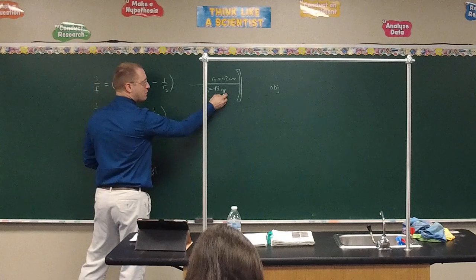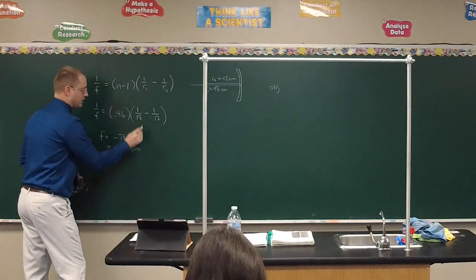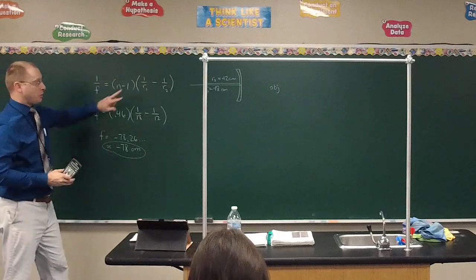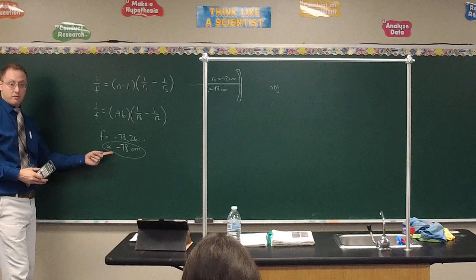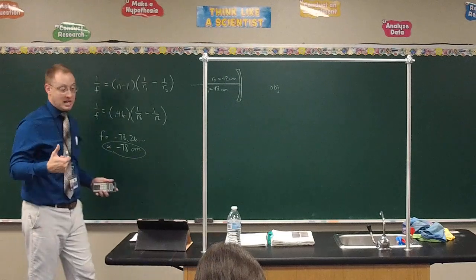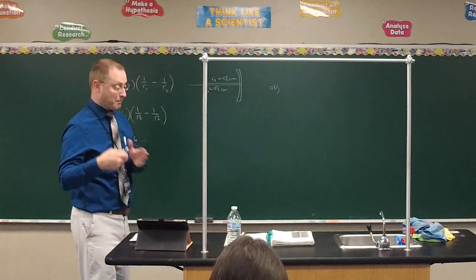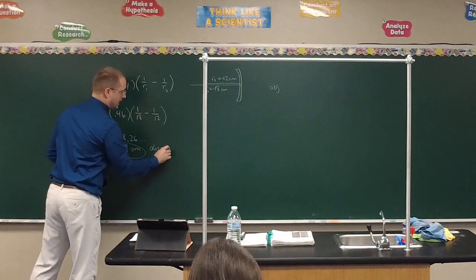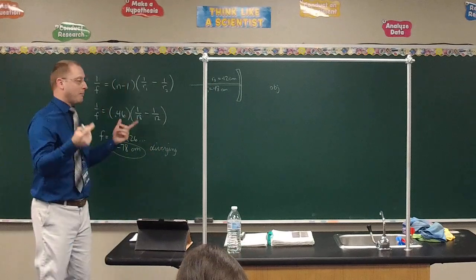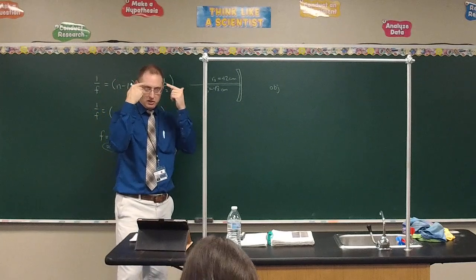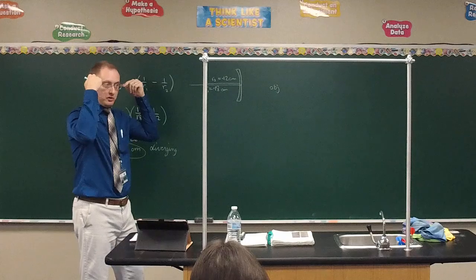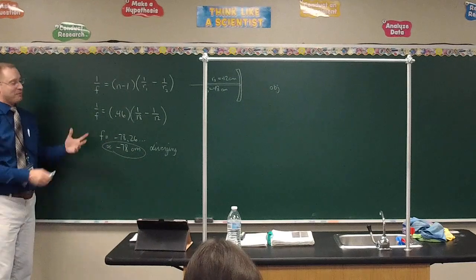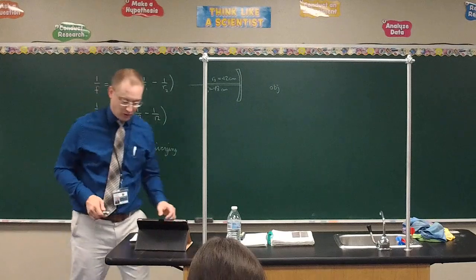Negative 78 centimeters is our focal length — measured in the same units as the radii of curvature. If you had the radii switched you would have gotten positive 78. Since it's negative, the lens is diverging. By the way, this somewhat mimics what my glasses are: convex side toward the object with a slight bulge, more pronounced curve on the backside with the concavity — my lenses are diverging lenses.